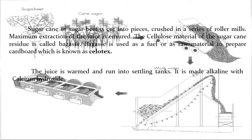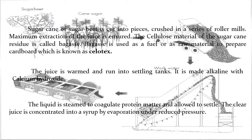The juice is made alkaline with calcium hydroxide. The liquid is steamed to coagulate protein matter and allowed to settle. The clear juice is then concentrated into a syrup by evaporation under reduced pressure.